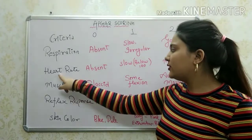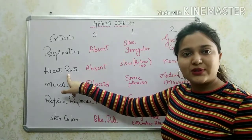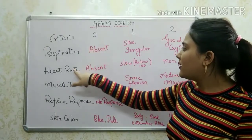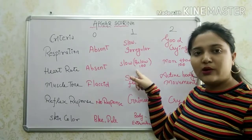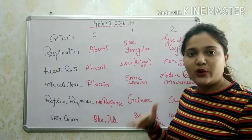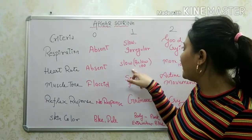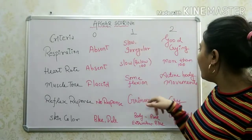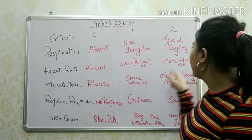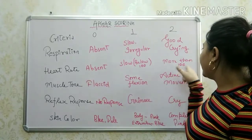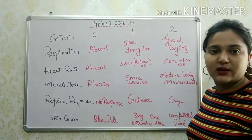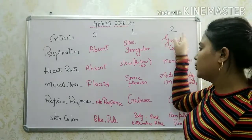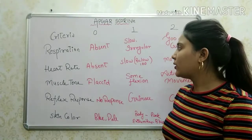For heart rate: if the heart rate is absent, we score 0. If the heart rate is slow and below 100, we score 1. If the heart rate is more than 100, we score 2.